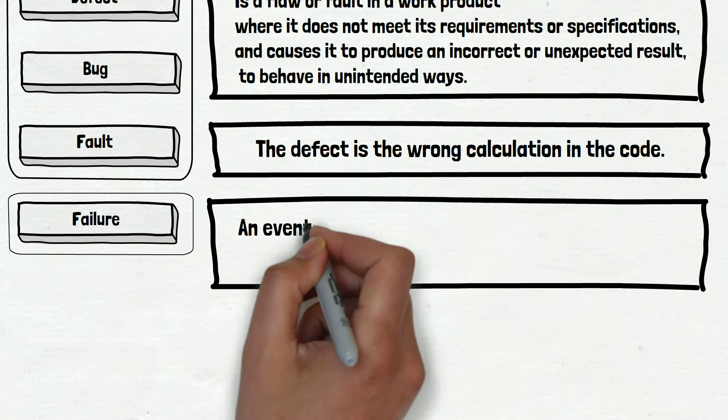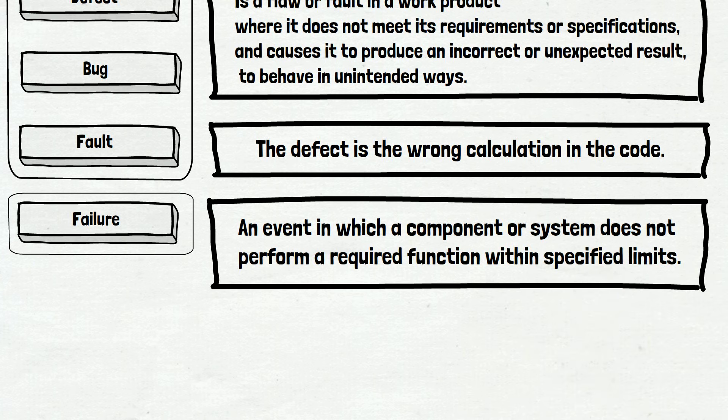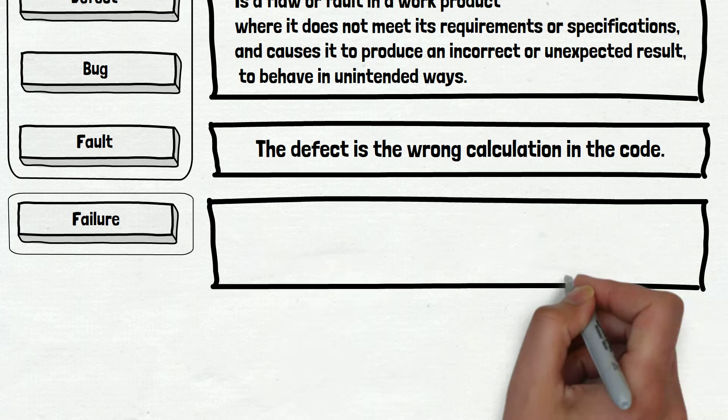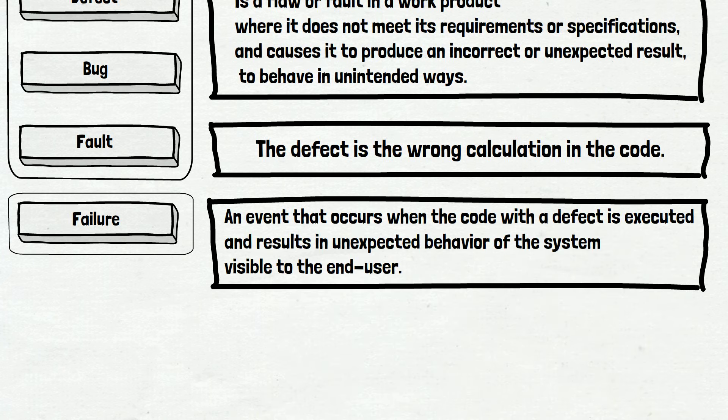According to ISTQB, the failure is an event in which a component or system does not perform a required function within specified limits. As usual with the theory, the definition is very wide and complex. In our case, we can make it less accurate but more understandable. In simple words: An event in which the code with the defect is executed and results in unexpected behavior of the system visible to the end user. Yes, this definition is not extremely accurate, but it emphasizes the differences between the terms. Let's talk about the failure in our example and then summarize the whole picture.